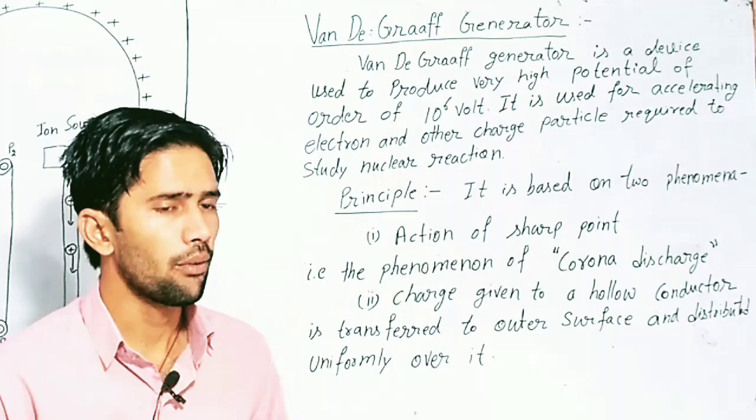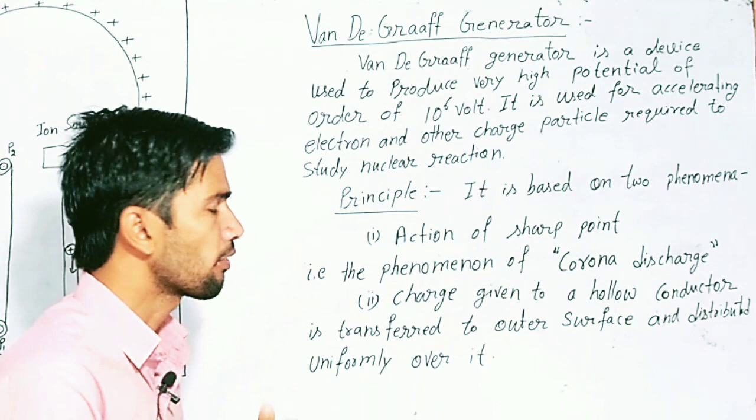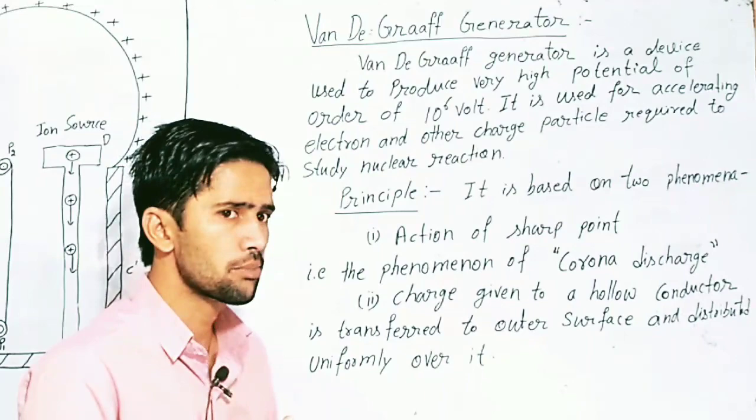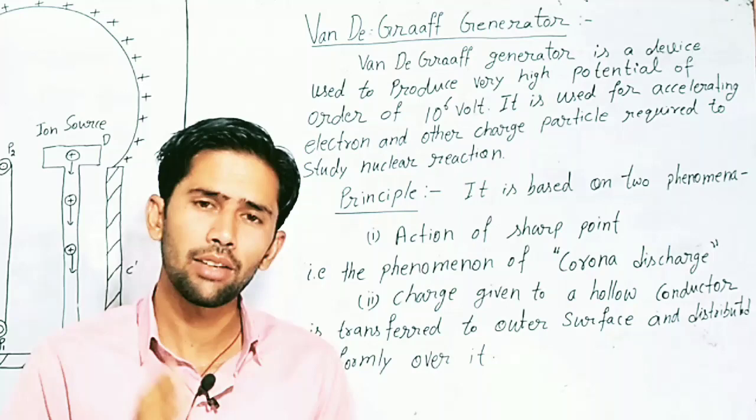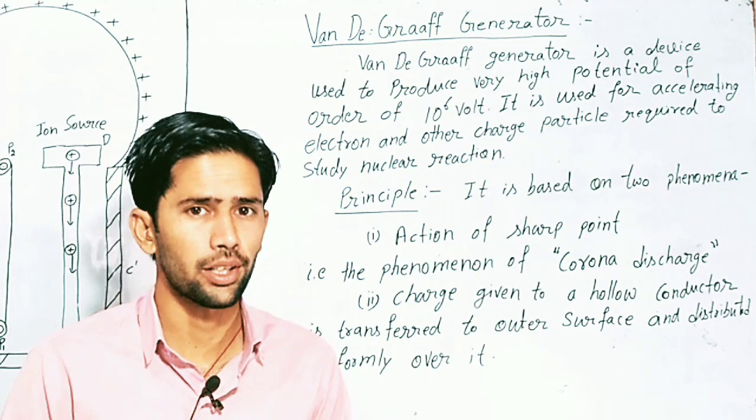A Van de Graaff generator is a device which produces a very high potential of the order of 10 to the power 6 volts and it is used for accelerating electrons and other charged particles which can be used in nuclear reactions. So Van de Graaff generator is a device in which we produce a very high potential difference.